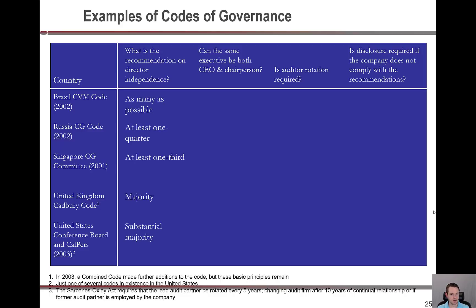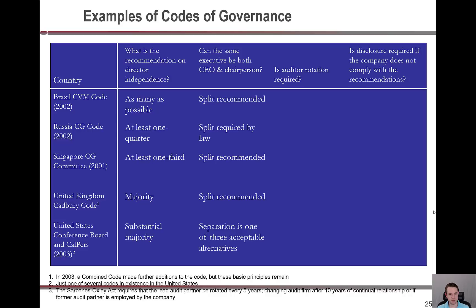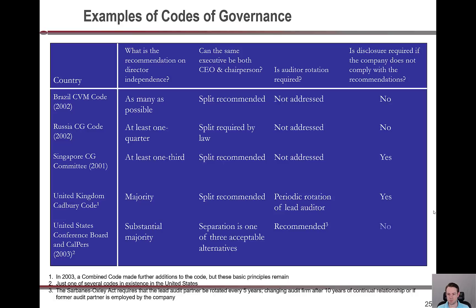Looking at global governance comparisons: regarding director independence, Brazil wants as many as possible, Russia requires at least a quarter, Singapore a third, and the UK a majority. On whether the CEO and board chairperson should be split, countries vary from recommended split to required separation. On audit rotation, requirements differ widely, and fascinatingly, in many countries disclosure is not even required if a company is not complying with these recommendations — showing significant variation in governance strength across the world.